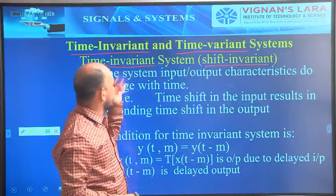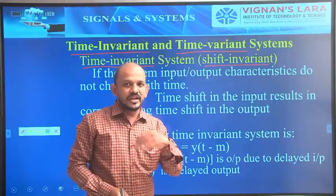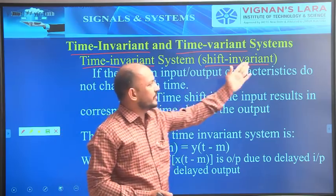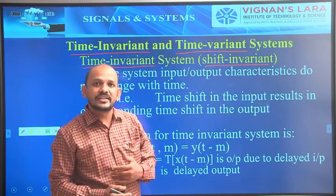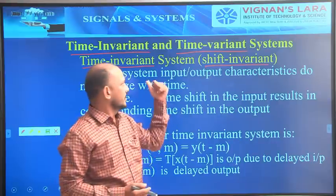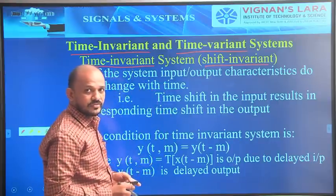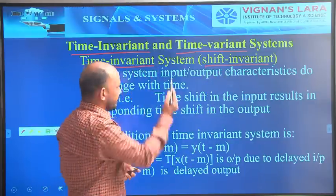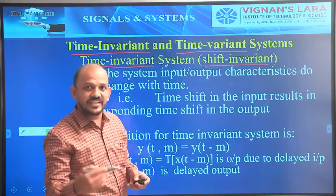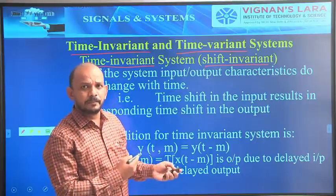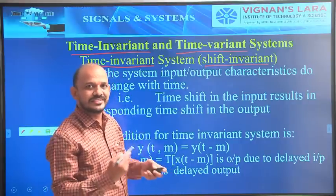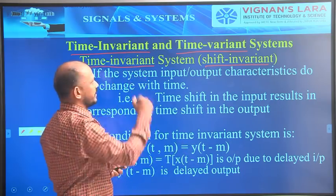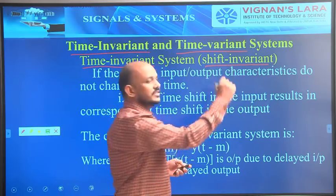Generally, time invariant is used for continuous time signals, and shift invariant is used for discrete time signals. You can call it either time invariant or shift invariant based on the type of input and output signals. If it is a continuous time signal, you say time invariant; if it is a discrete time signal, you say shift invariant.